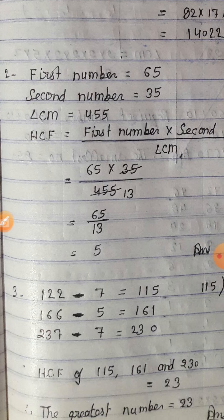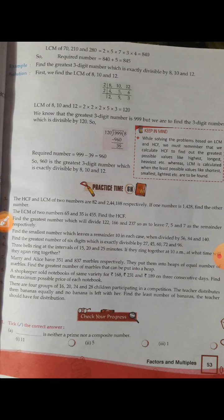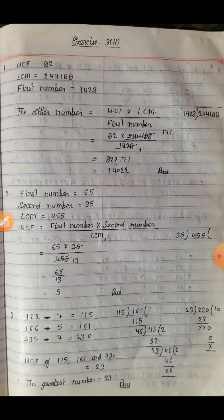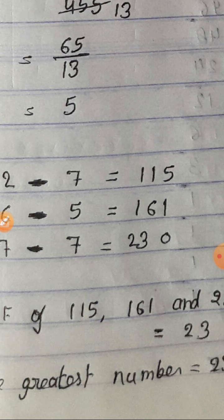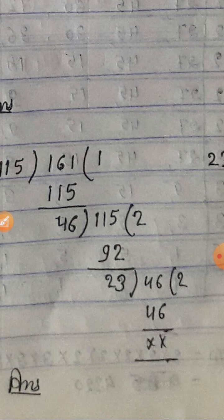Question number 3: Find the greatest number which leaves remainder 7 when dividing 122, 166, and 237. पहले remainder को minus करते हैं: 122−7=115, 166−5=161, 237−7=230. अब 115, 161, 230 का HCF find करना है जैसा previous video में division method और prime factorisation method से बताया।